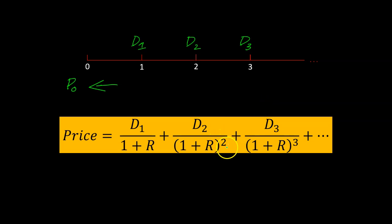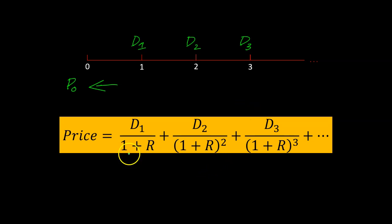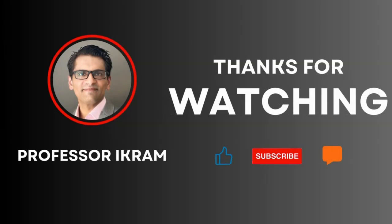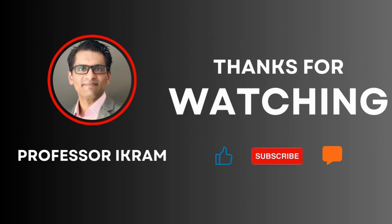There are some additional parameters we can put around this framework to make the model a little more useful, and that is something I'm going to talk about in a separate video. The purpose of this video was to help you see why you can think of the price of a stock today as the discounted value of all the dividends — and dividends alone — that it is going to produce. If you found this video useful, click the like button and subscribe to the channel, and feel free to ask any questions using the comment section. Happy learning.